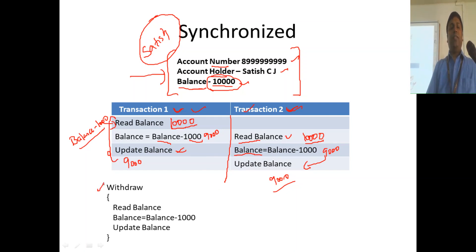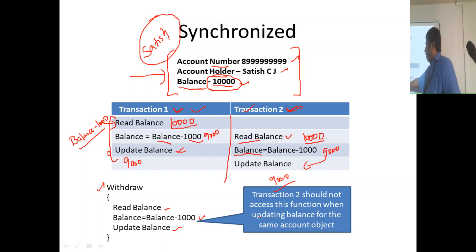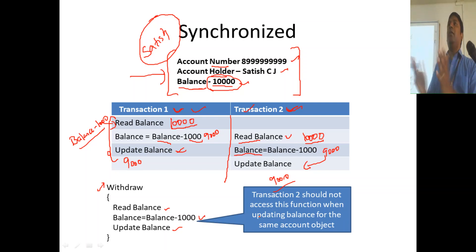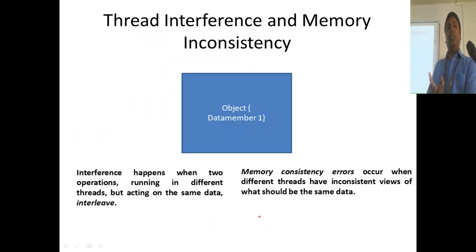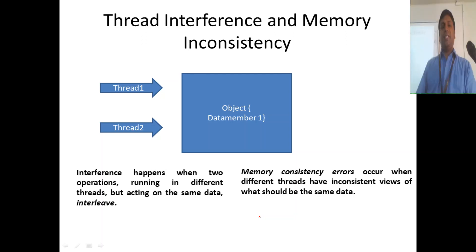When you consider these steps as a block of code — say withdraw — what all things do you do? Read balance, balance = balance - 1000, update balance. Should transaction 2 access this block of code while transaction 1 is executing? That is the question. While withdraw is happening for Satish's account, transaction 2 should not be allowed to also withdraw. These two things should not run in parallel. If they run in parallel, you get thread interference and memory consistency errors — one update is not visible to another.